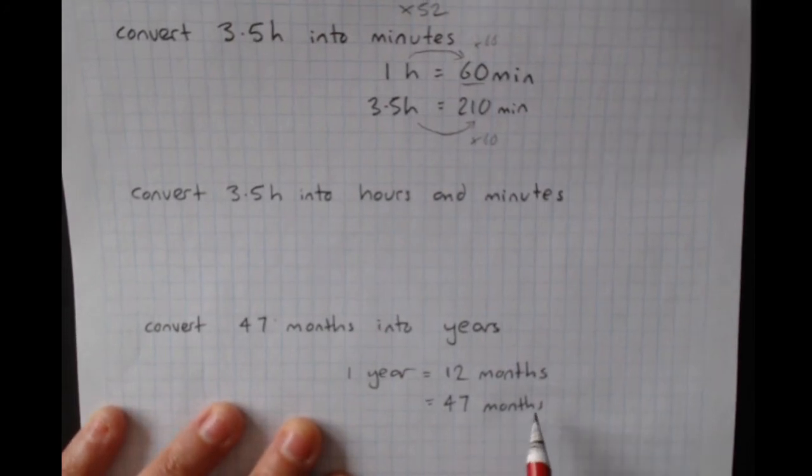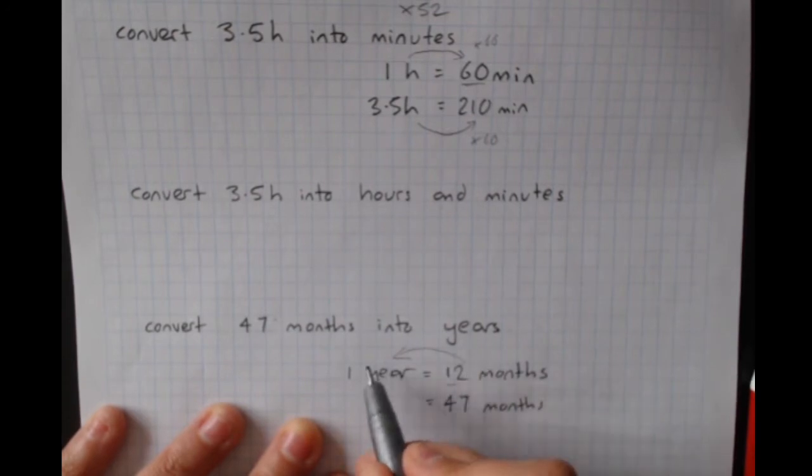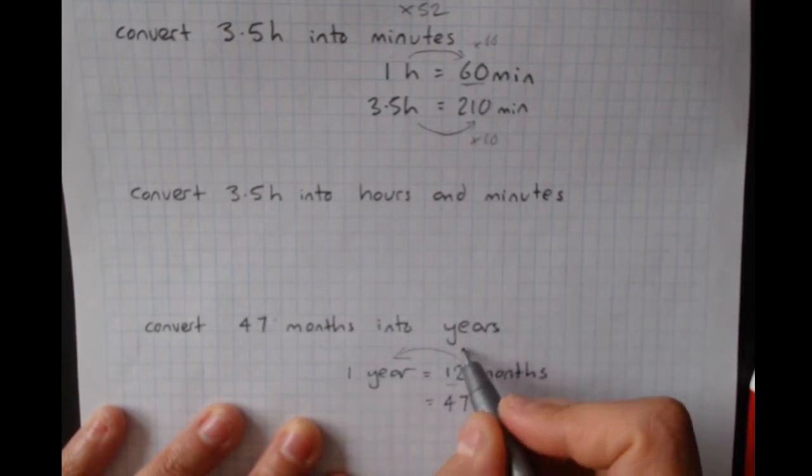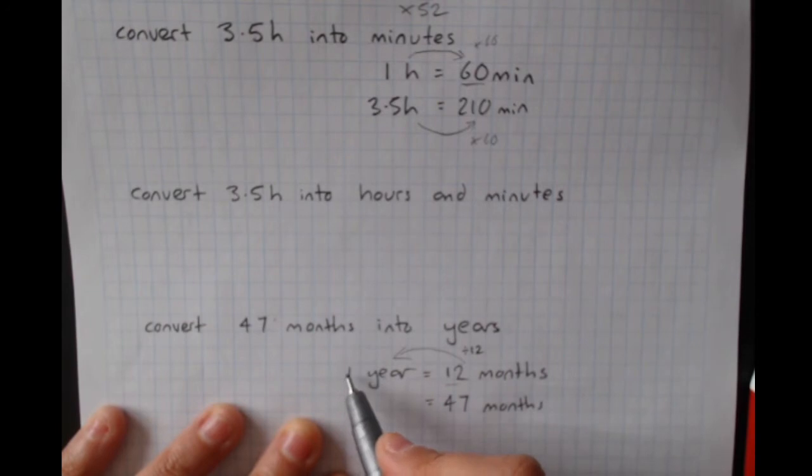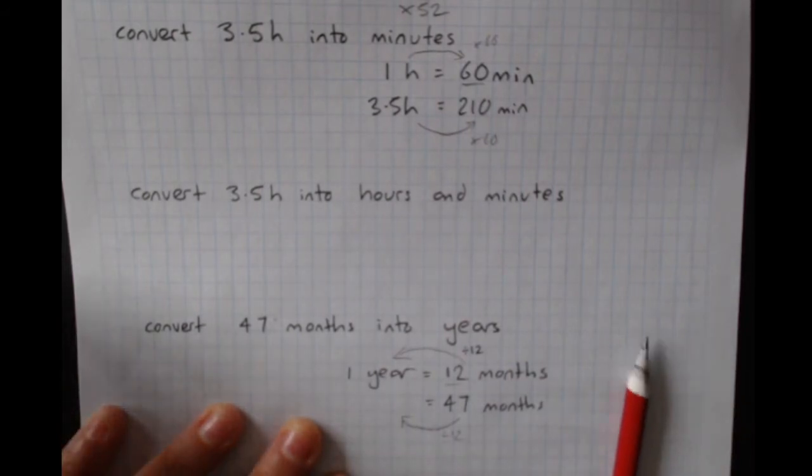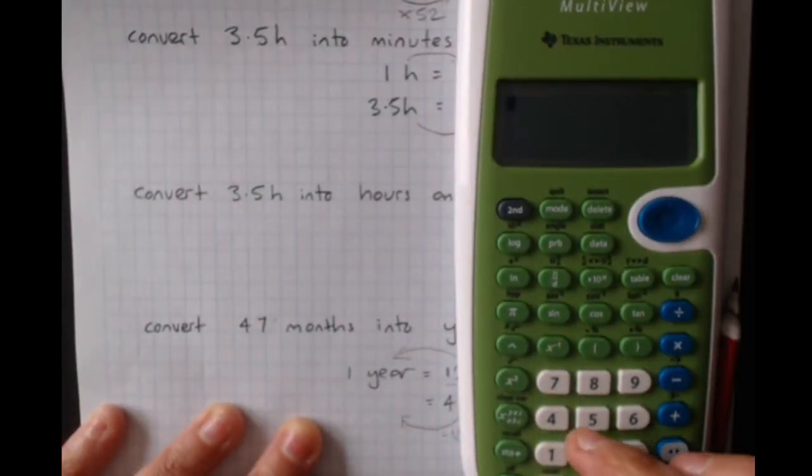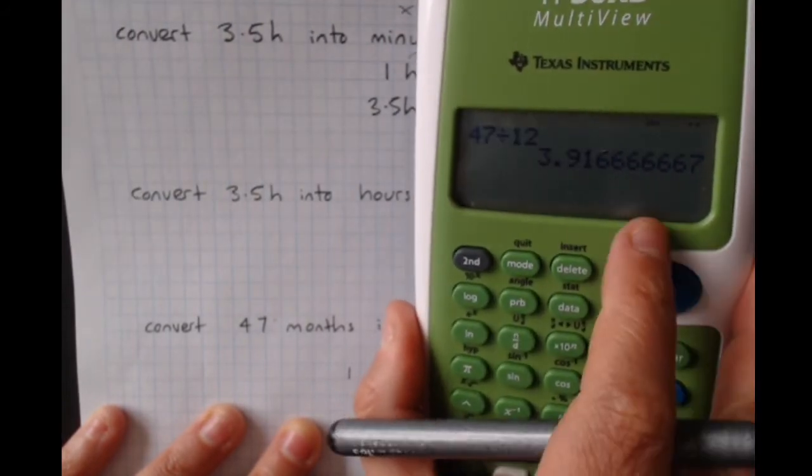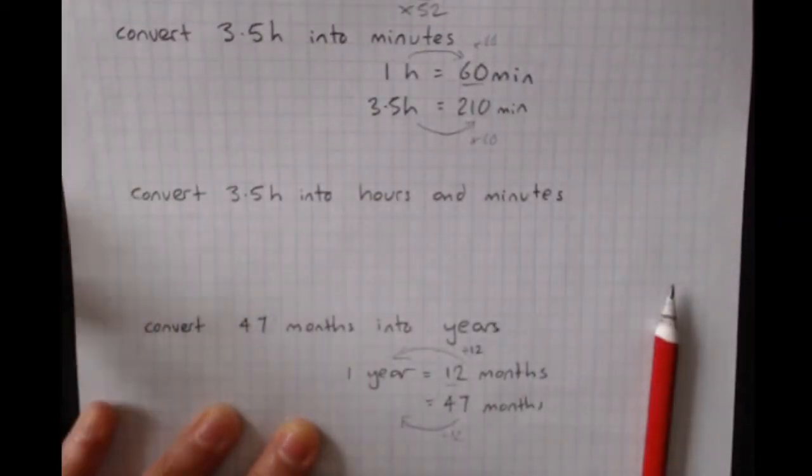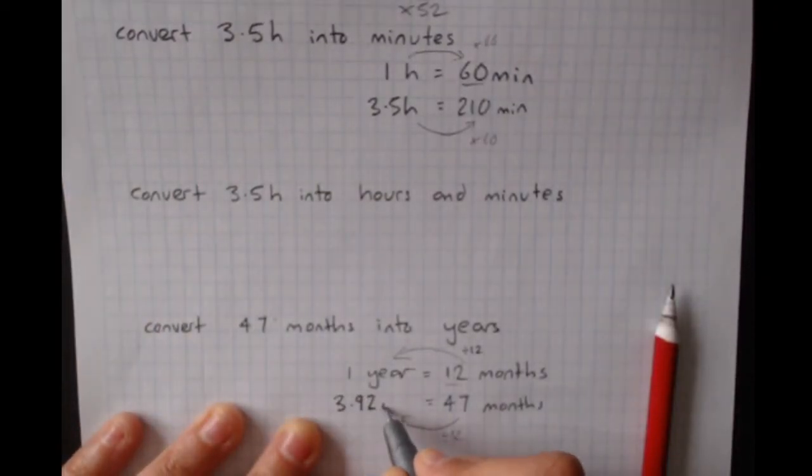So remember, I want to go from the side where I know something to the side where I don't. How do I get from 12 to 1? It's always going to involve this number. To go from 12 to 1, I would have divided by 12. 12 divided by 12 is 1. Anything divided by itself is 1. So I'm going to need to divide by 12 here as well. 47 divided by 12. So 3.916 repeater, 3.92 years.